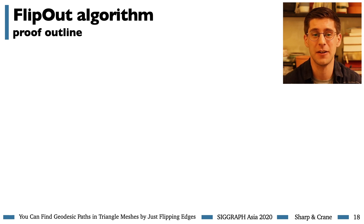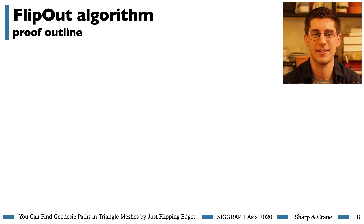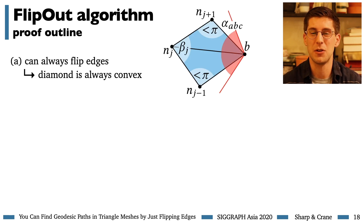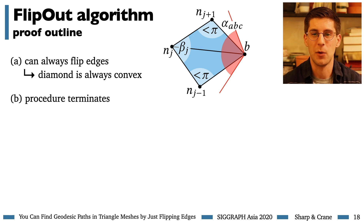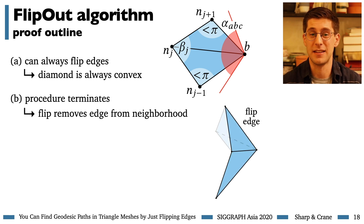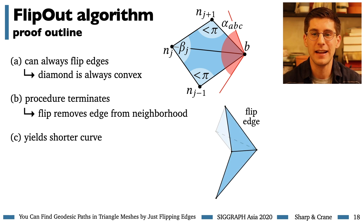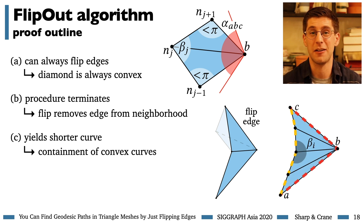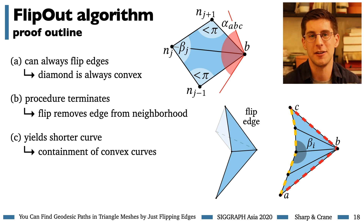We prove this always works, even on curved surfaces. First, we prove you can always flip the edges you need to flip, which follows from the preconditions of the algorithm. We prove the procedure always terminates — each flip basically removes an edge from the neighborhood. And finally, once all outer angles beta are greater than pi, the curve along the perimeter is a convex curve, and by classical planar geometry — the containment of convex curves — it must be shorter than the path we started with.